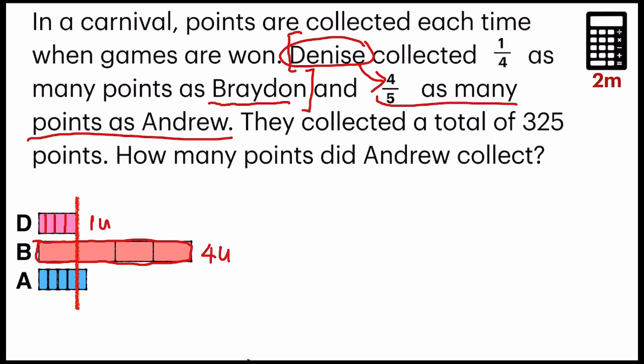Before we divide, we know that they had a total of 325 points altogether. Before any division, you have to make sure that your model is divided into equal parts. Since every rectangle box is four units, Brayden would have four units inside all of these boxes as well.